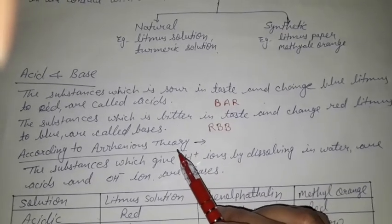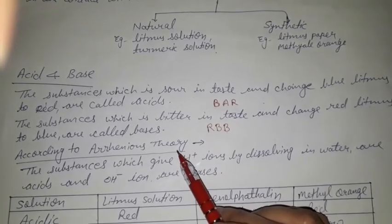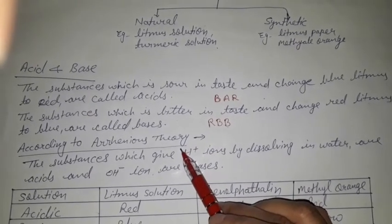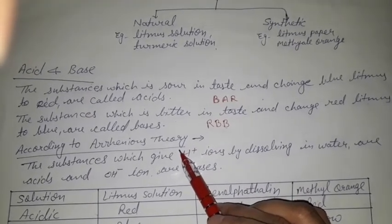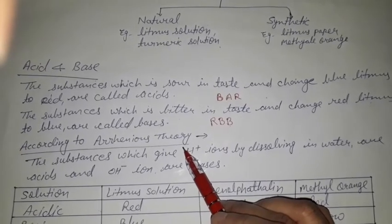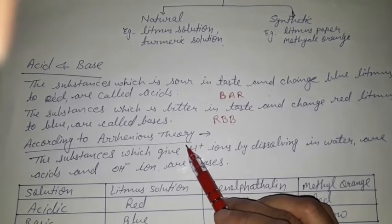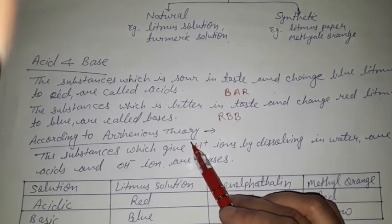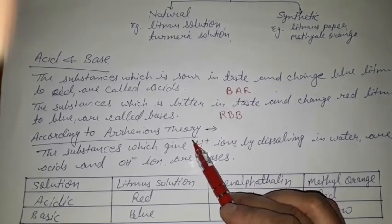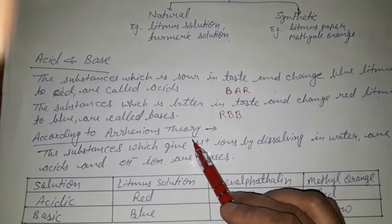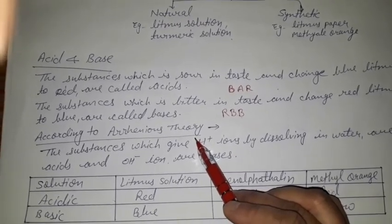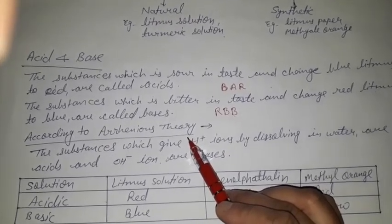Now according to Arrhenius theory: substances that, when dissolved in water, give hydrogen ions (H⁺ ions) are known as acids.